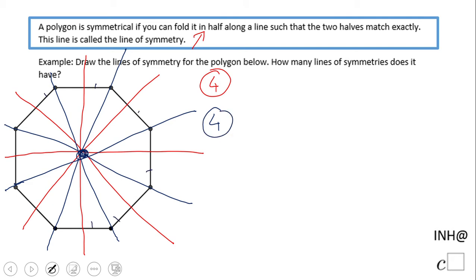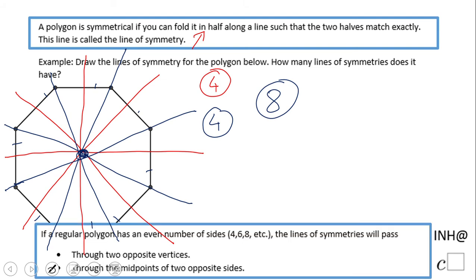This polygon has eight sides. It has eight lines of symmetry. You see, four of them go through opposite vertices, and the other four go to the midpoint of the opposite sides. That's it.